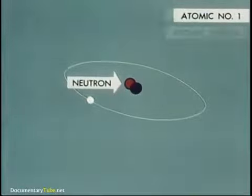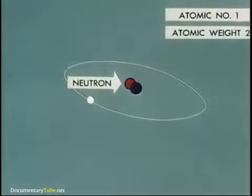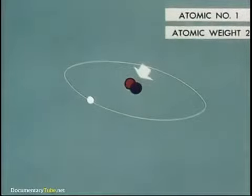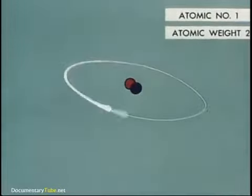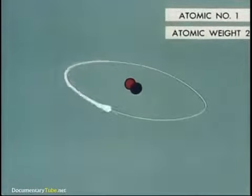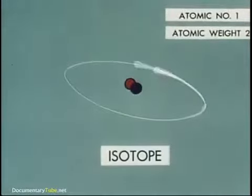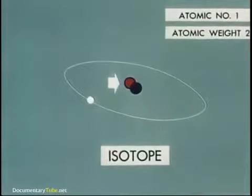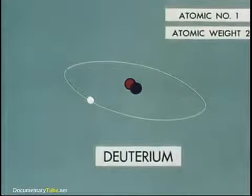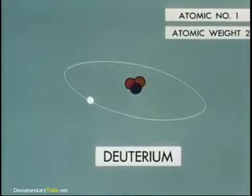It gives this form of hydrogen an atomic weight of two, the sum of the protons and neutrons in the nucleus. Different forms of the same element, with different weights but carrying the same electrical charges and having identical chemical behavior, are known as isotopes. For example, adding this neutron to a standard atom of hydrogen would produce this isotope of hydrogen known as deuterium. This is the hydrogen in heavy water. Adding another neutron produces a third hydrogen isotope called tritium.